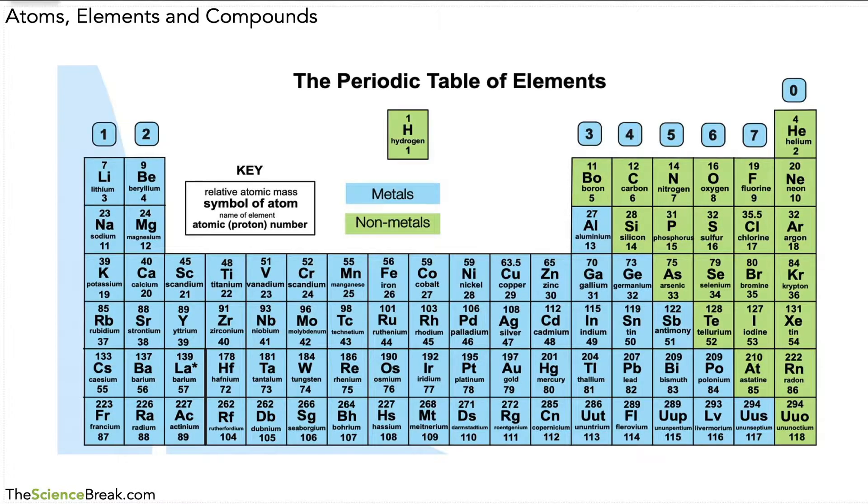The first thing is that if we want to see a list of all the elements that exist or that have been discovered, we would look on the periodic table of elements. This is the periodic table or a version of it. I'm sure you've seen something like this before. The key thing to remember is that all the elements are present on this periodic table, and if it's not on this periodic table, it's not an element. This contains all the elements that we work with in chemistry.